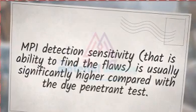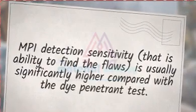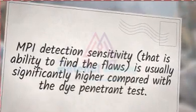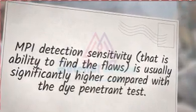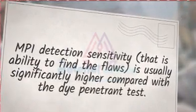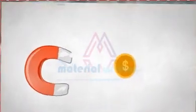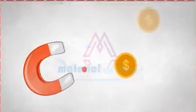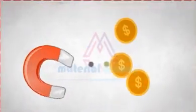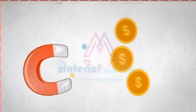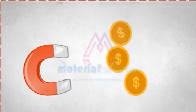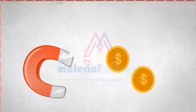MPI detection sensitivity — that is, the ability to find flaws — is usually significantly higher compared with the dye penetrant test. The MT test is cheaper compared to PT but is only limited to ferromagnetic materials such as carbon steel, low alloy steel, and nickel alloys.